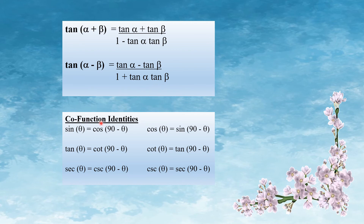The cofunction identities: sin theta equals cos(90 minus theta), cos theta equals sin(90 minus theta), tan theta equals cot(90 minus theta), cot theta equals tan(90 minus theta). These are the cofunction identities.